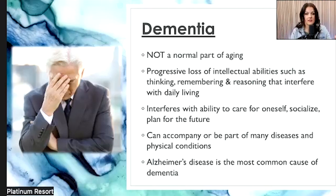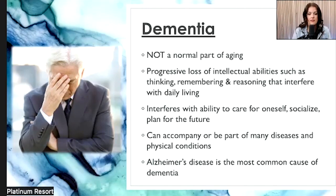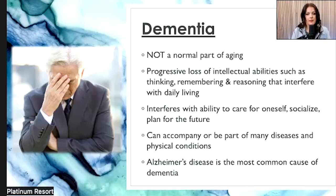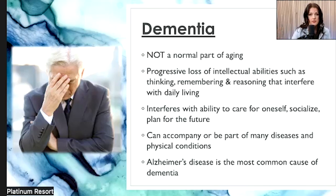It's a progressive loss of your cognitive abilities, such as thinking, remembering, and reasoning. And all these things tend to interfere with your activities of daily living. When someone does get dementia, they lack an ability to care for themselves and to socialize with other people. It can be accompanied by many diseases, and Alzheimer's is the most common form of dementia.